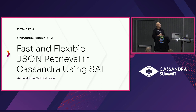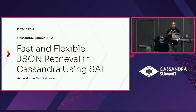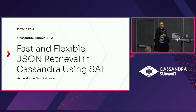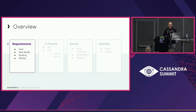There are other document-based databases out there that have set some standards, and some of that is around usability. We would like to see how we can be a bit more usable for people in the Node.js community. Today we're going to talk about the requirements of what we were trying to do and try to understand how the JSON data model works.